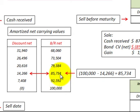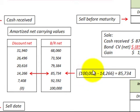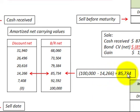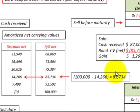We received $87,000 in cash when we sold the bond. The carrying value of our bonds receivable at that point is calculated as the $100,000 face value minus the remaining balance in the discount to bonds receivable, which gives us $85,734. So $85,734 is the carrying value of our bonds receivable at the time of sale.